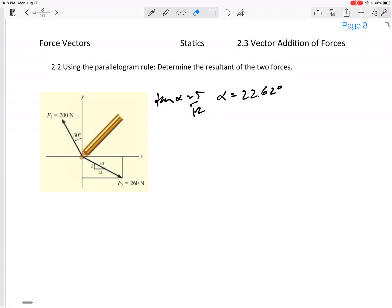So anyway, what if it had told me that this is 22.62 degrees below horizontal? And I want to add it up to this one that is 30 degrees right here. Let me move over here and redraw this tip to tail. I'm going to draw this one first. It is 260 at 22.62 degrees right here.